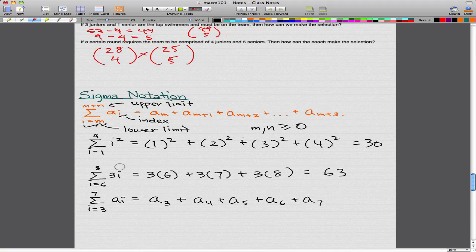Welcome back, and these are the answers that I got. From a lower limit of 6 and an upper limit of 8, we get 3 times 6 plus 3 times 7 plus 3 times 8. And from a lower limit of 3 and an upper limit of 7 with Ai, we get A3 plus A4 plus A5 plus A6 plus A7. That's all I want to go through today.